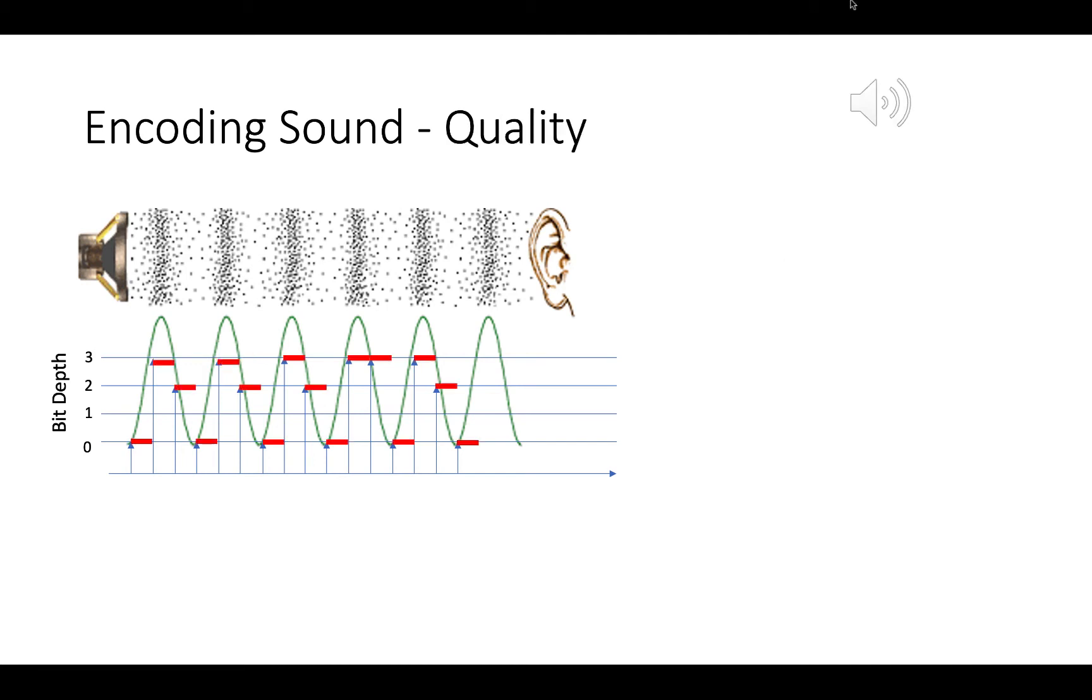So to help visualize this loss of quality, the green wave here is our actual sound wave. The blue arrows are each of our samples, and the red lines represent the sound that the computer is actually recording. So you can see that at this sample rate and at this bit depth, the representation of the computer's sound is pretty far from the original sound. And that's going to translate to us as a really low quality sound recording.